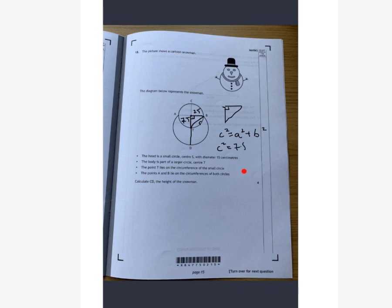So c squared is going to equal 7.5 squared plus 7.5 squared. So I ended up with c squared equaling 112.5 so c equals 10.61 centimetres. And what they're asking for is the overall height of this snowman which is the diameter of the head plus radius of the larger circle that would be 15 plus 10.61 which I ended up with 25.61 centimetres.